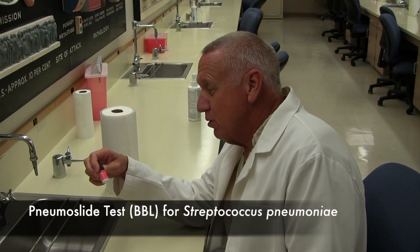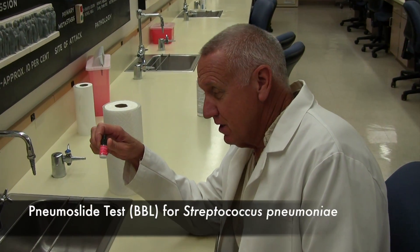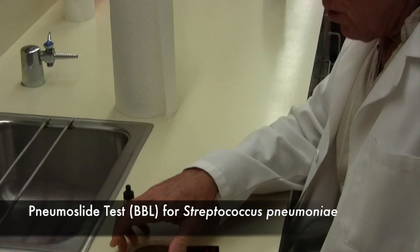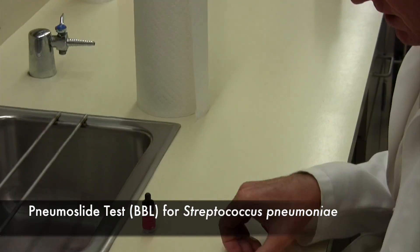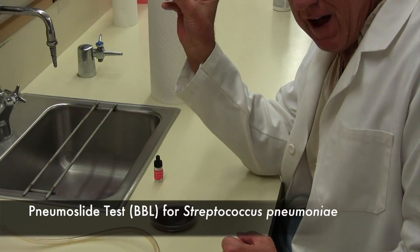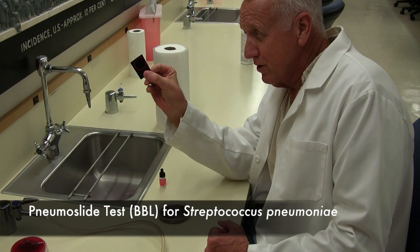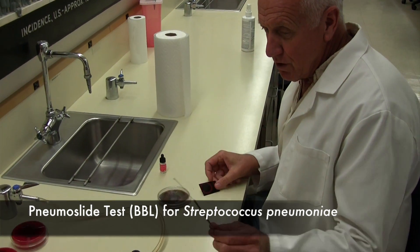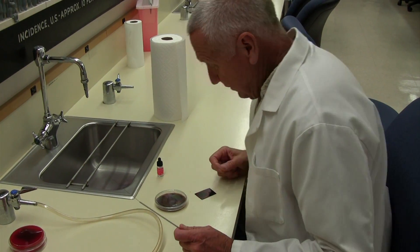You're going to need the pneumoslide test reagent and your organism to be tested and a black background card to do the slide test on, and of course your fire and loop.